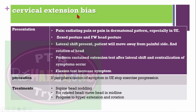For cervical extension bias: the same pattern applies as lumbar. Pain is in a dermatomal pattern radiating to the upper extremity. The patient has forward head posture or flexed posture; if a lateral shift is present, the patient moves away from the painful side. A sustained cervical extension test should show centralization of symptoms; flexion test increases symptoms. Precaution: if peripheralization of symptoms occurs in the upper extremity, stop exercise progression. Treatment includes supine head nodding, rotating the head to midline, and progressing to hyperextension and rotation.